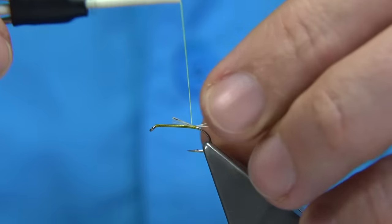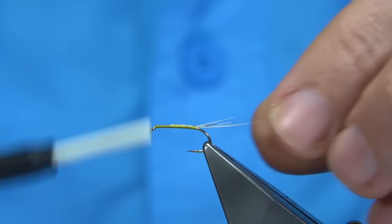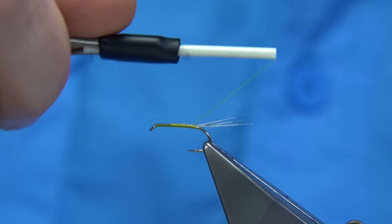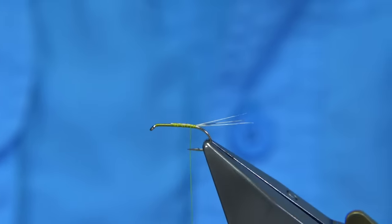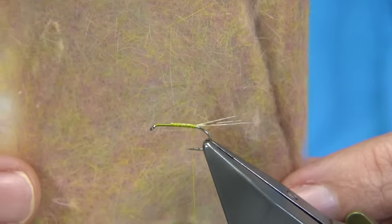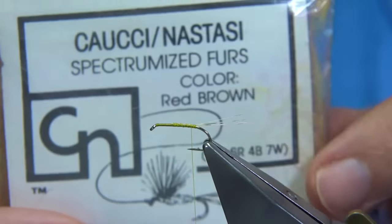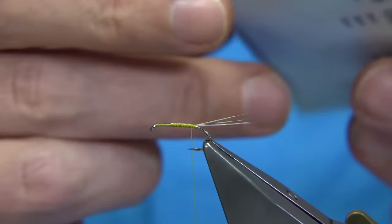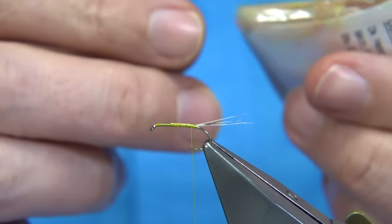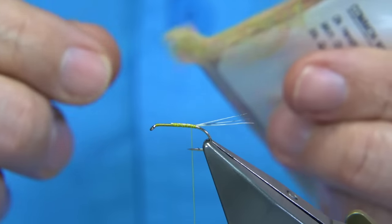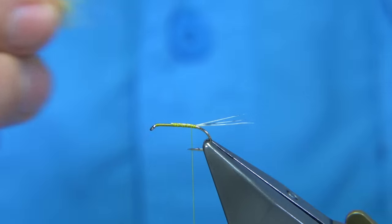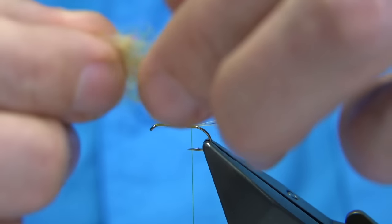I'm just going to quickly take the thread up, securing in these ends and then coming back down. The dubbing I'm using for the yellow version is this one here, called Red Brown. It's a spectrumised dubbing or spectrumised fur. It's a great blend if you can get it, but if you can't, just use a nice warm yellow or so. It's ideal for the March Brown.